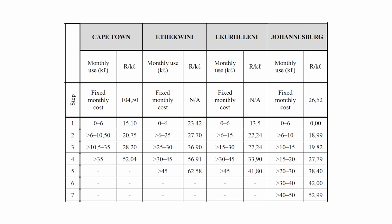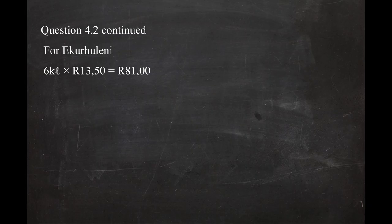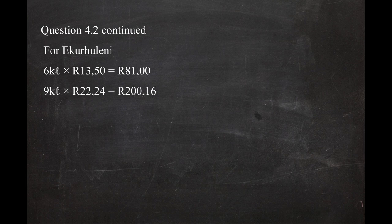In step two, the range is greater than six kilolitres to 15 kilolitres. The maximum amount chargeable is 15 − 6 = 9 kilolitres, at R22.24 per kilolitre. You must subtract six kilolitres already charged in step one. The cost for step two is 9 kilolitres × R22.24 = R200.16.